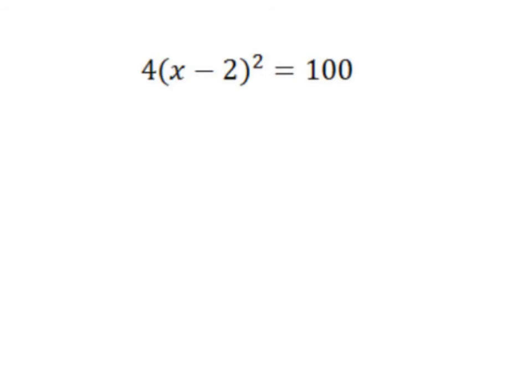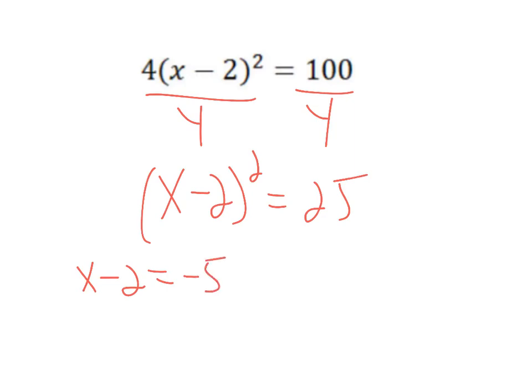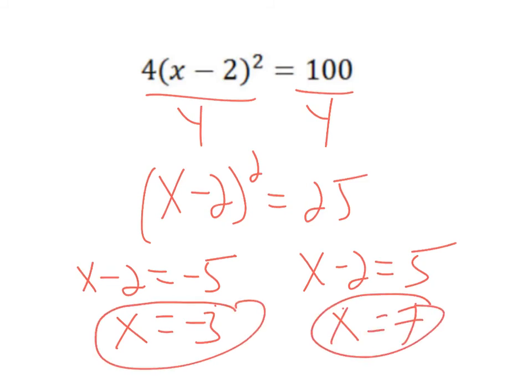Here's another one. If you want to stop the video and do it, you can. One thing I want to caution you about is we have to move that four first. So I'm going to divide both sides by four: (x - 2)² = 25. Now I'm going to take the square root of both sides. That leaves me x - 2 = -5 and x - 2 = 5. I'll add two to both sides: x = -3. Add two again: x = 7. And those are the two solutions.